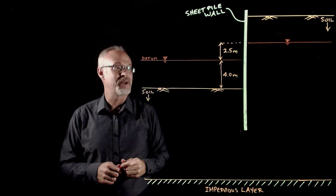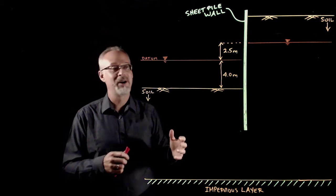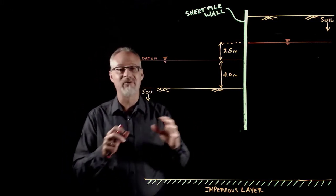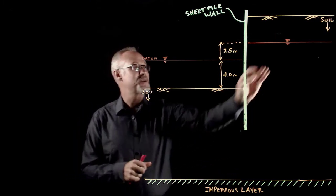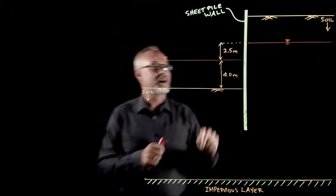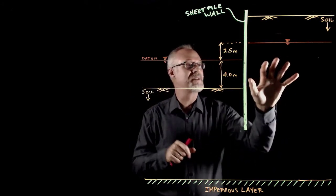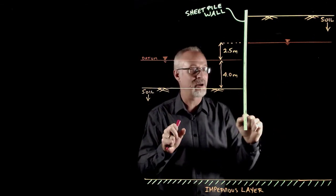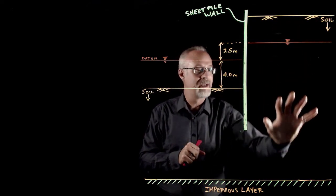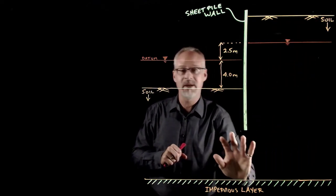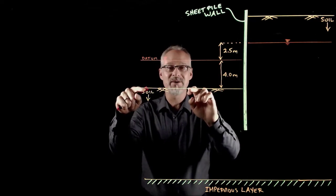The flow net only exists where there is both water and soil. I don't have a flow net above the surface because there's no water there, and I don't have one in open water because there's no soil. The flow net will only exist where actual seepage is occurring — starting at the water table inside the soil on the high side, flowing around the tip of the sheet pile, and stopping at the soil surface on the low side. The flow net does not continue into open water.